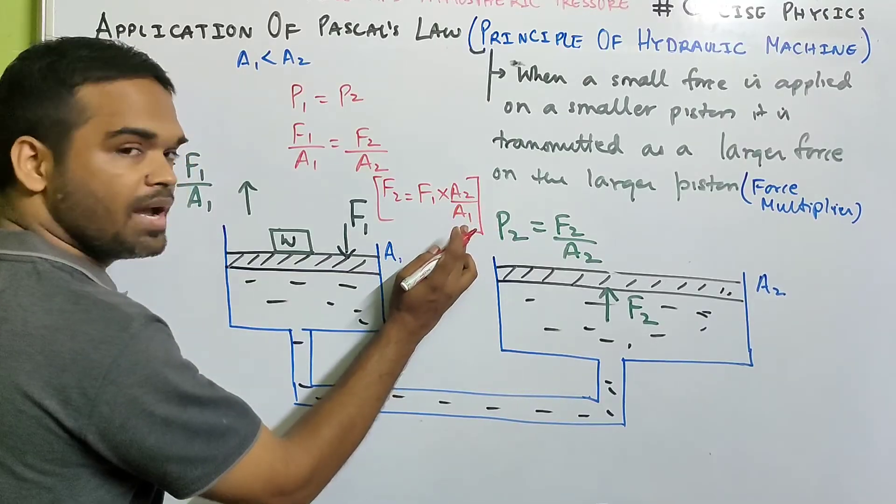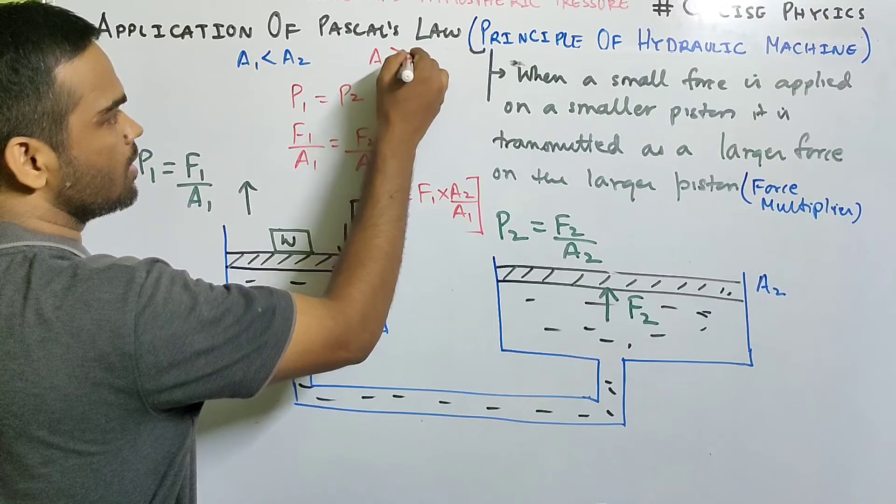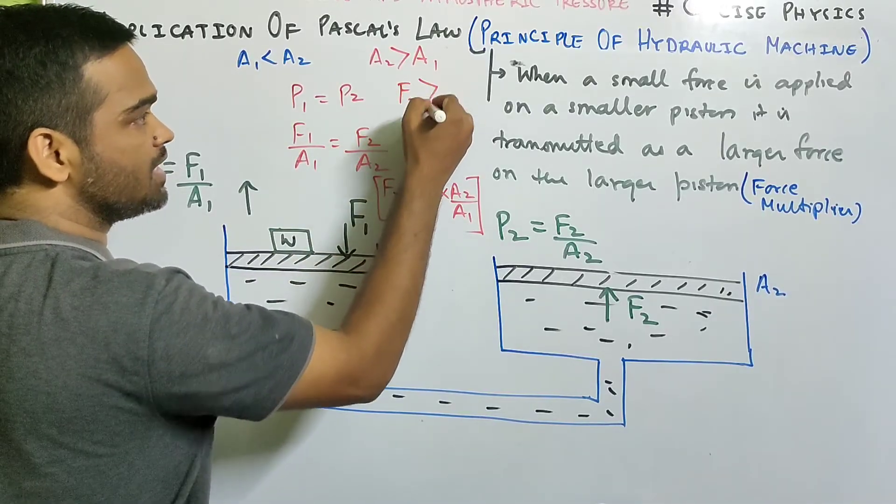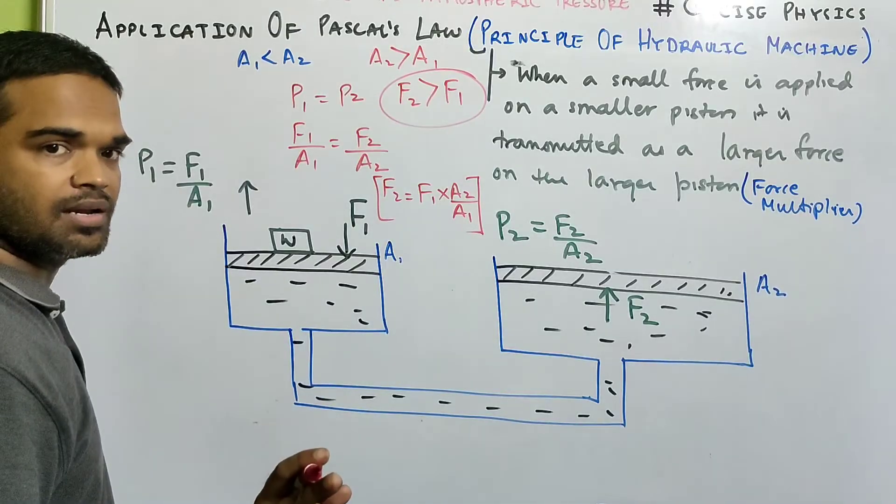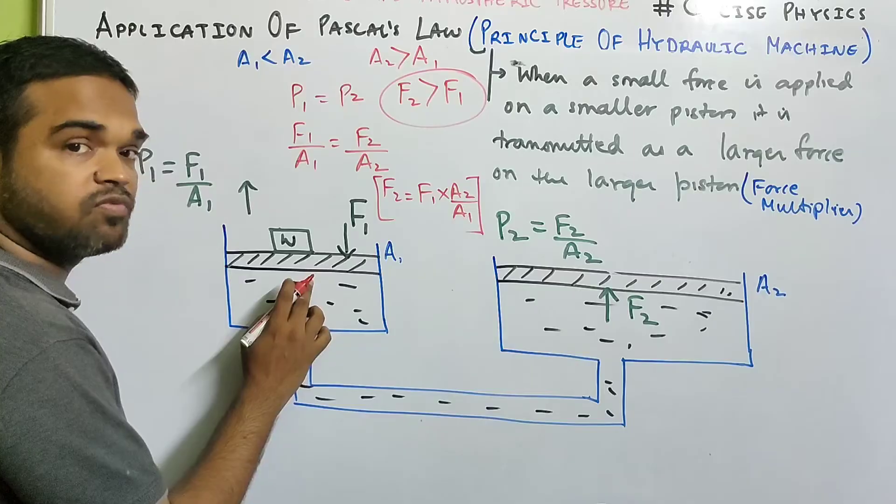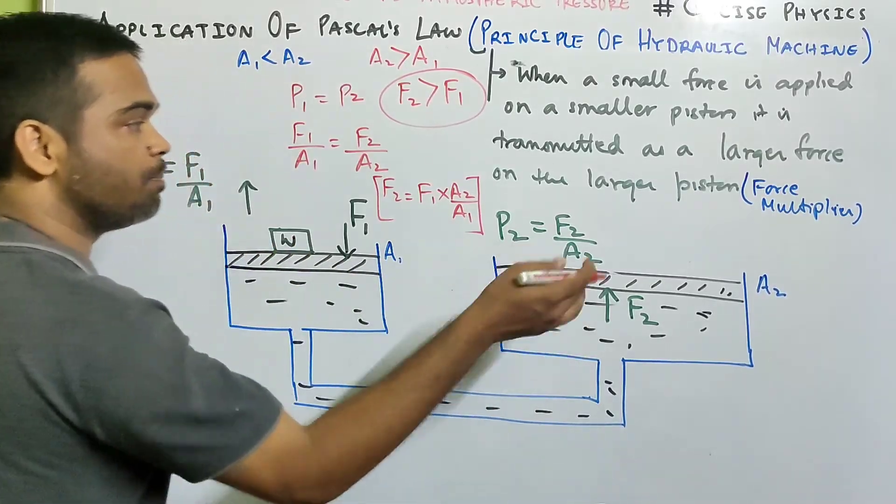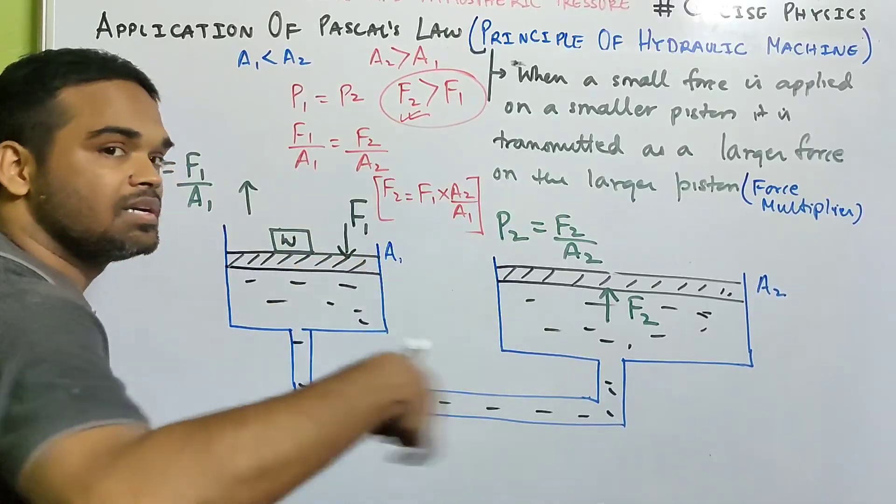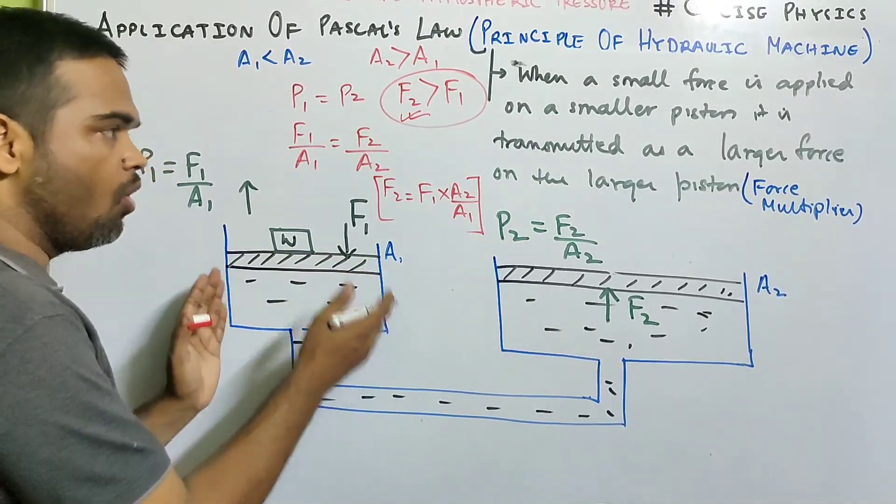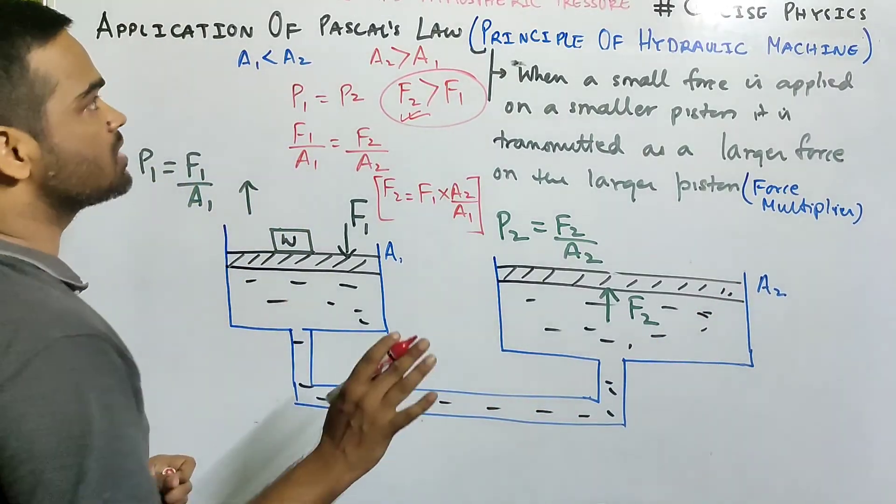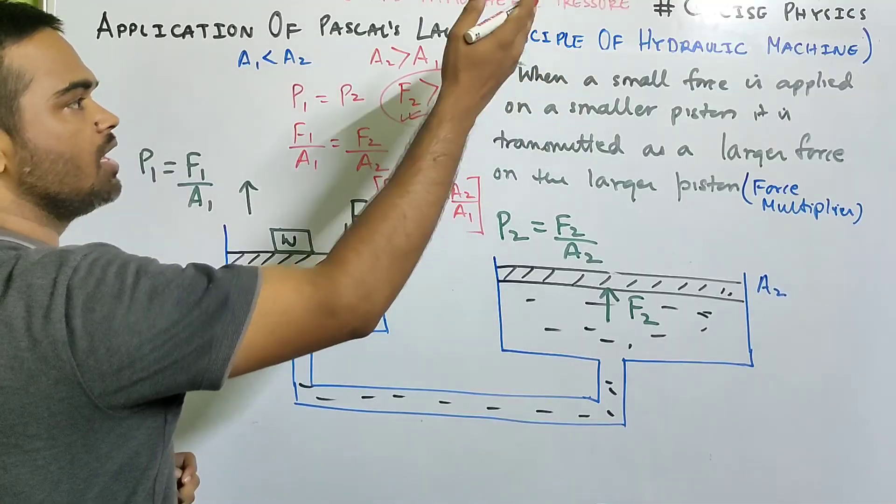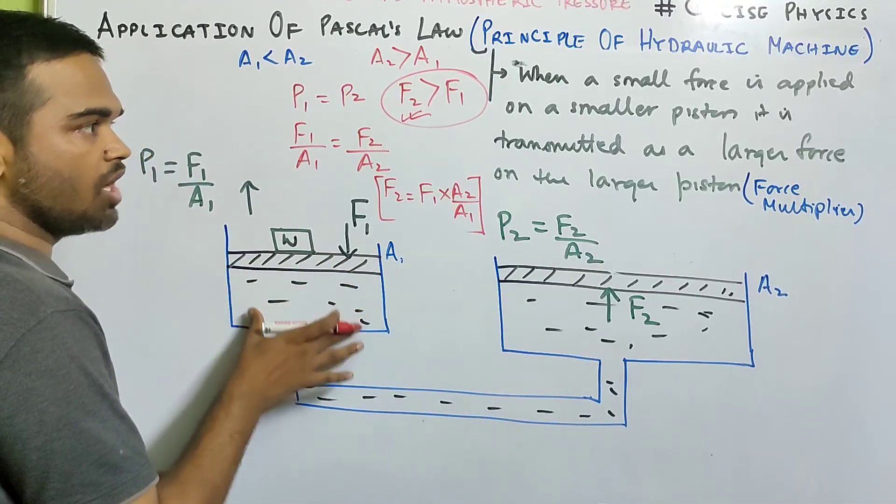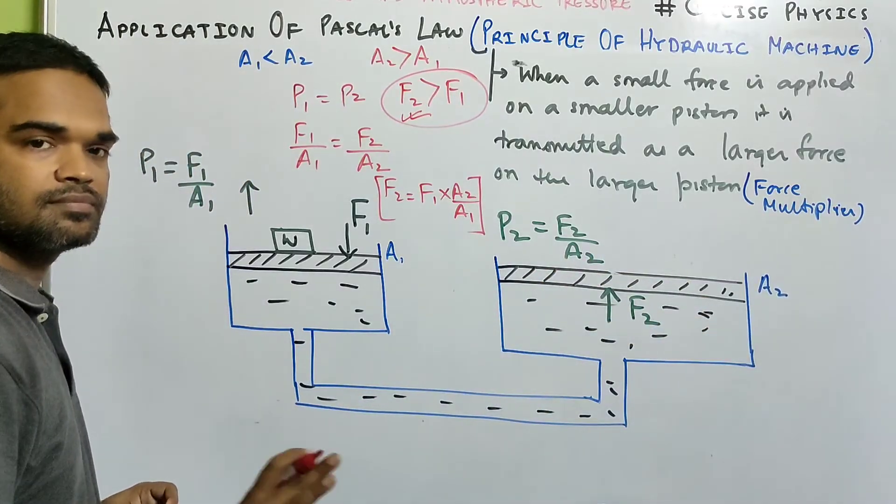Now a2 by a1, so a2 is greater than a1. a2 is greater than a1, which means f2 will be definitely greater than f1. Am I clear or not? So what is happening? The force over here was f1, it is getting multiplied. f2 is bigger as compared to f1. Am I clear or not? So here is the force multiplied, where a small force is magnified. So this is the principle of hydraulic machine. When a small force f is applied on a smaller area, you know, this is transmitted as a larger force on a larger area. Am I clear?